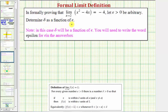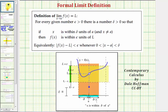Let's begin by reviewing the formal definition of a limit. The definition of the limit as x approaches a of f of x equals L is that for every given number epsilon greater than zero, there's a number delta greater than zero, so that if x is within delta units of a and x doesn't equal a — meaning x would be in the interval between a minus delta and a plus delta, where x doesn't equal a — then f of x is within epsilon units of L, meaning f of x is in the interval from L minus epsilon to L plus epsilon.